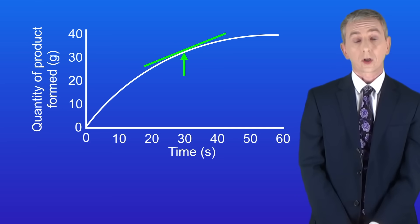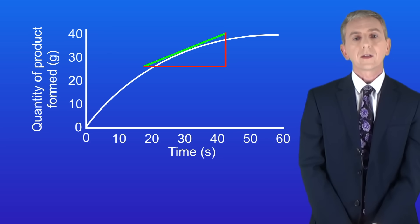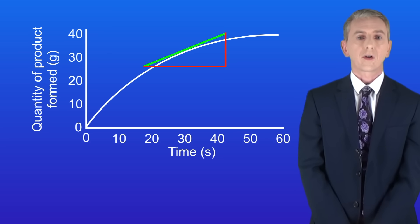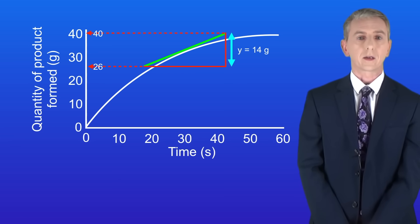Now we use the tangent to construct a triangle like this. At this point we need to find the lengths of the sides of the triangle. Reading from the y axis we can see that the vertical side stretches from 26 grams at the bottom to 40 grams at the top. This gives us a value of 14 grams for the y side of the triangle.